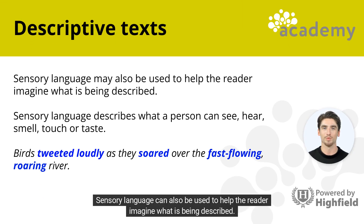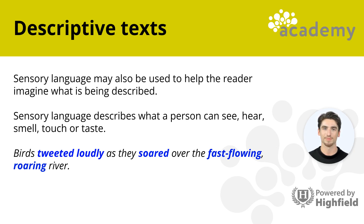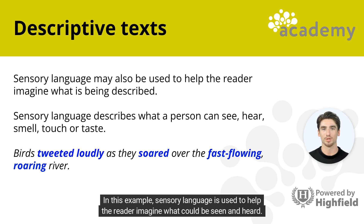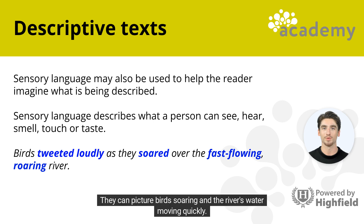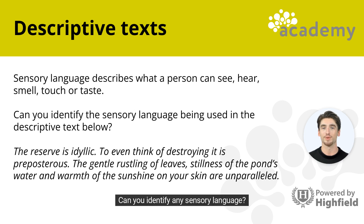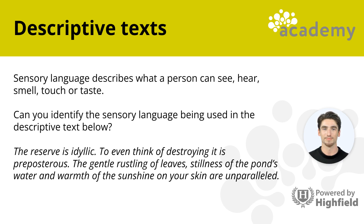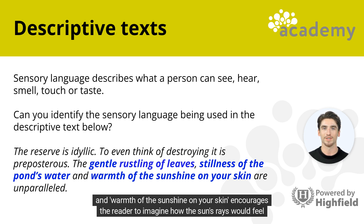Sensory language can also be used to help the reader imagine what is being described. Sensory language uses the five senses — things we can see, hear, smell, touch, and taste. For example, 'birds tweeted loudly as they soared over the fast-flowing, roaring river' uses sensory language to help the reader imagine what could be seen and heard. In the example shown, 'gentle rustling' describes the sound of leaves, 'stillness of the pond's water' is a visual description, and 'warmth of the sunshine on your skin' encourages the reader to imagine how the sun's rays would feel.